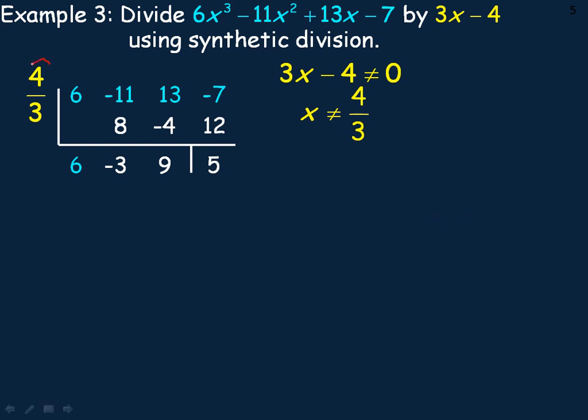Now, because we have a 4/3 over here, we didn't actually divide by 3x minus 4, we actually divide by x minus 4/3. That's what we actually divide it by.